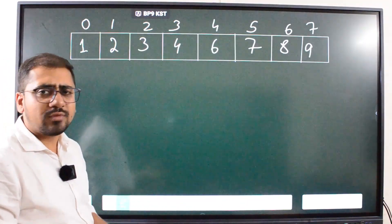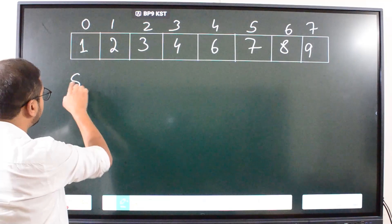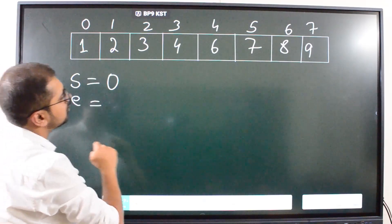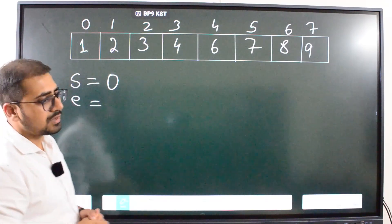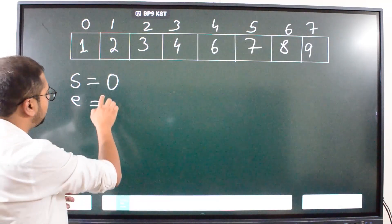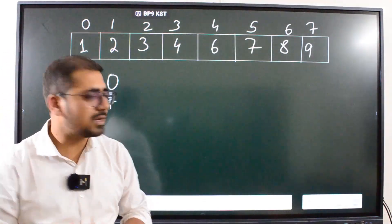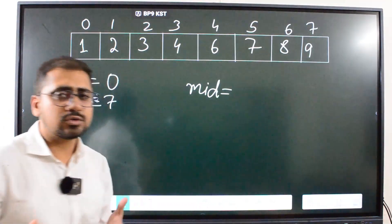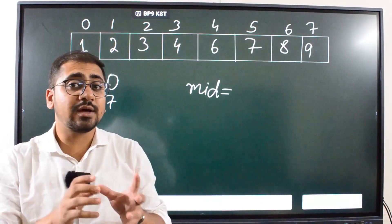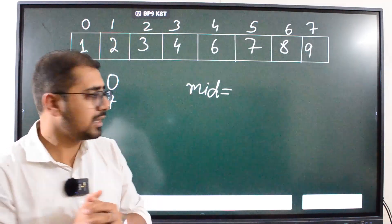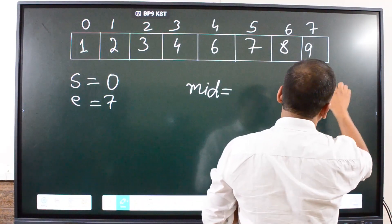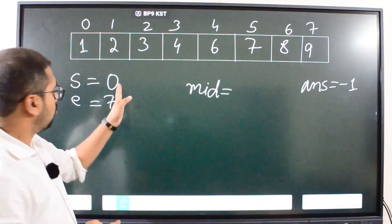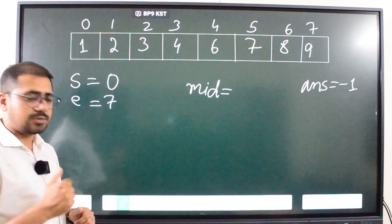Now let's implement binary search. We have the start index equal to 0 and the end index equal to 7. Every time we find the mid index. We also have an answer variable which stores the index where 5 is missing — by default it is set to minus 1.